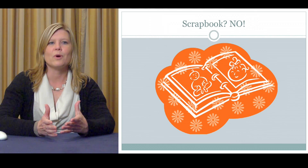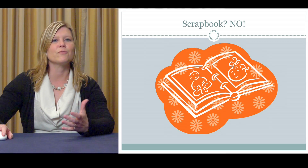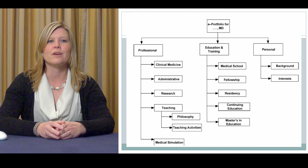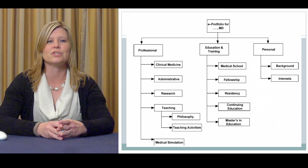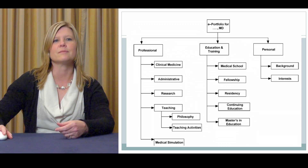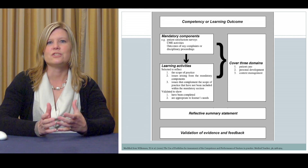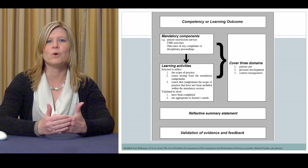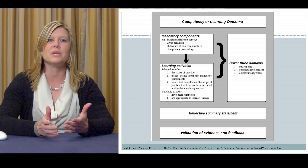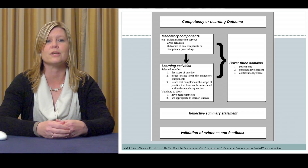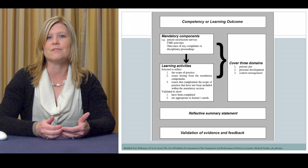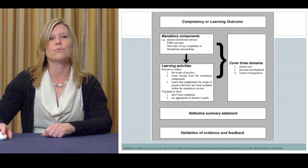One thing we don't want to do is have a portfolio just be a scrapbook, and that's kind of what happens with portfolios I've seen. This is an example of a chart that shows a portfolio for a resident or student from one institution — it's more like a resume or a vitae, and that's not really what we want. Whenever we're thinking about portfolios, we want them to be attached to a learning activity, a learning outcome, or a competency, and we want students to show that they have developed in a certain area. A better diagram shows the reflective piece, validation for the evidence provided, and feedback — those are key issues we'll talk about.